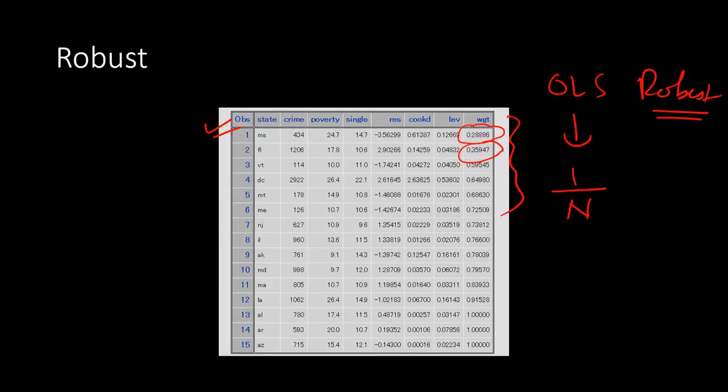So you can see the weight given to the first observation is 0.28 but the next observation is 0.35, 0.59 and so on. It is different. And some observations it has been given a weight of 1 which is the highest. Whereas in OLS it is all uniform. The weight is exactly the same.